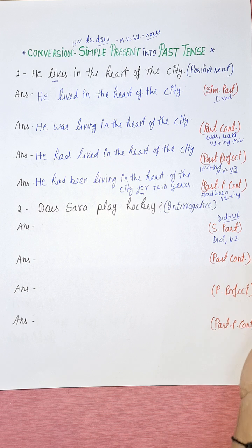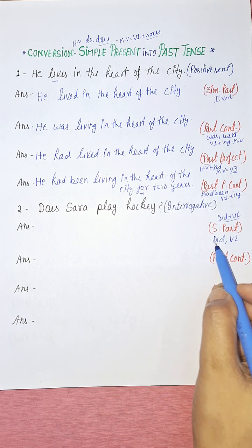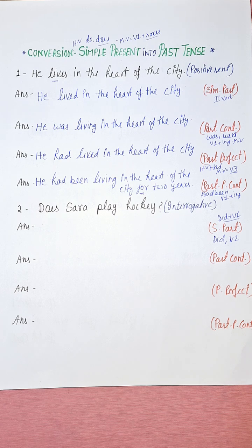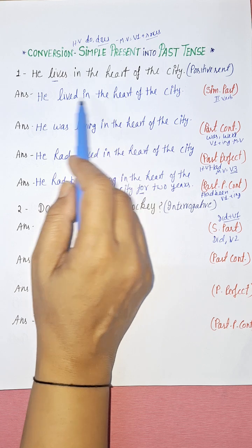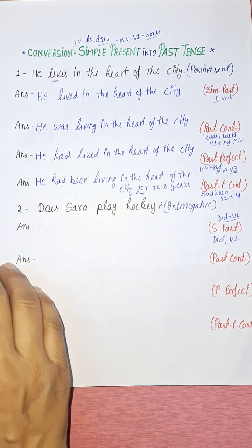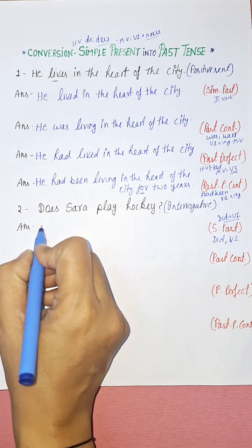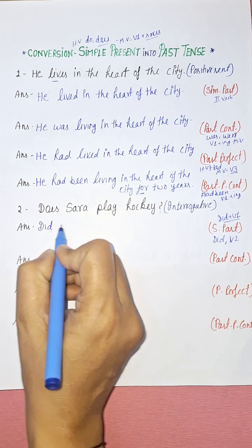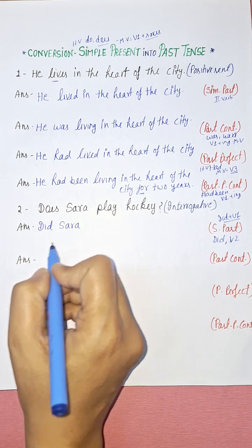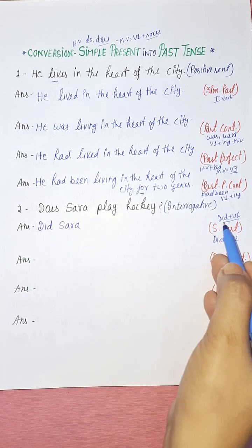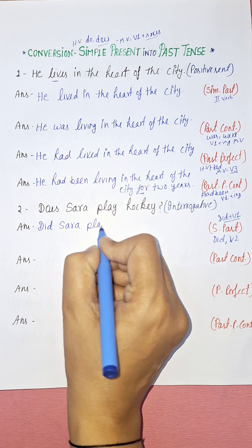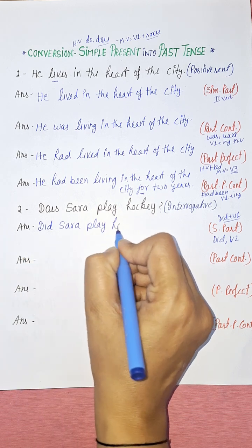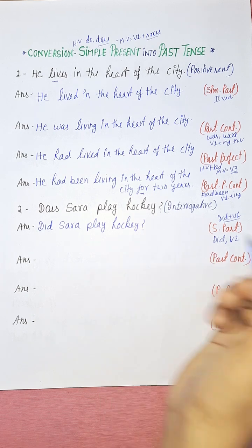If 'did' is present, we use V1 form. In a simple past positive sentence like 'he lived in the heart of the city,' there is no 'did' so we use the second form. But here, since it's interrogative, we write 'did' and keep the verb in V1: 'Did Sarah play hockey?'